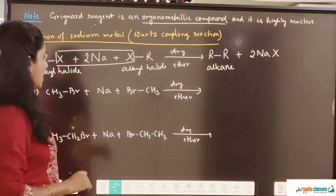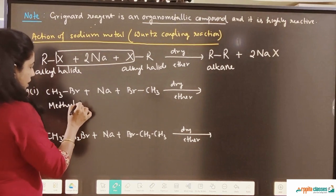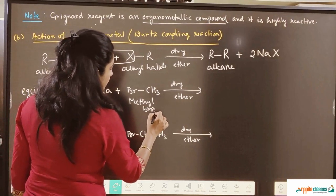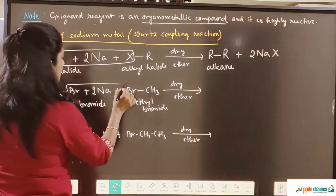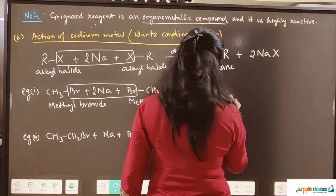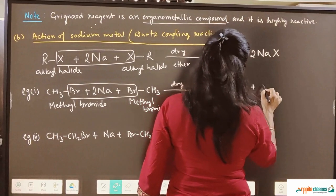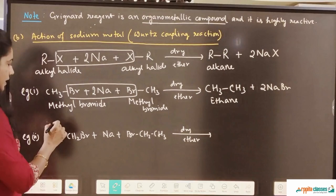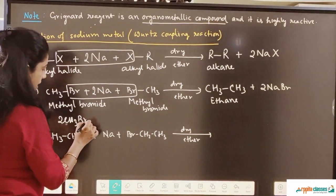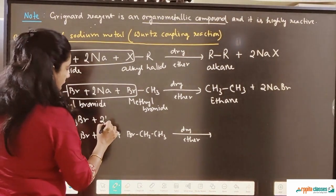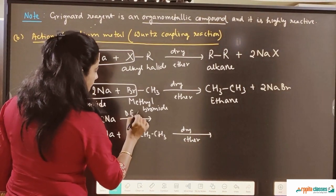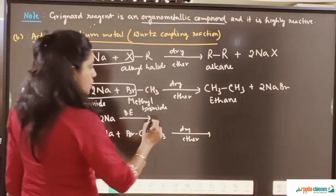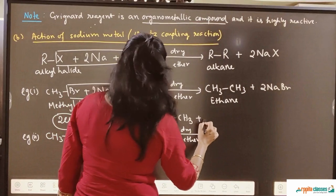Take the example: methyl bromide reacting with two atoms of sodium gives CH3CH3 plus two NaBr. CH3CH3 is called ethane. This reaction can also be written as two molecules of CH3Br with two sodium atoms in dry ether — you just double the CH3 part to get CH3CH3, which is ethane, plus two NaBr. Dry ether is a solvent here.